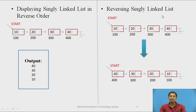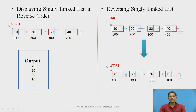In the case of actually reversing a singly linked list, suppose the original list contains 10, 20, 30, 40. After reversing, the list will become 40, 30, 20, 10. Start will point to 40. Node 40's next will hold the address of 30, 30's next will hold the address of 20, 20's next will hold the address of 10, and 10's next will contain null, indicating this is the end of the reversed list.